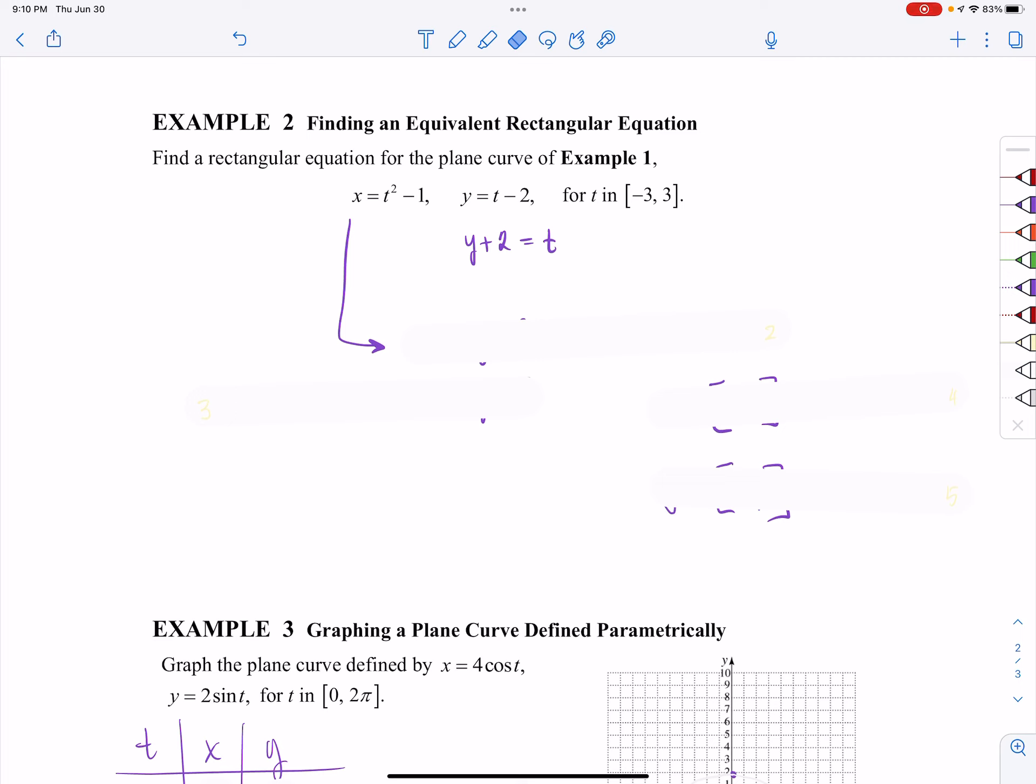And then what you'll do is you'll take your t and plug that in for the other equation for wherever t landed. So that's going to be x is equal to my t, which is now y plus 2 quantity squared minus 1. And since this is asking for a rectangular equation, normally we solve for y.